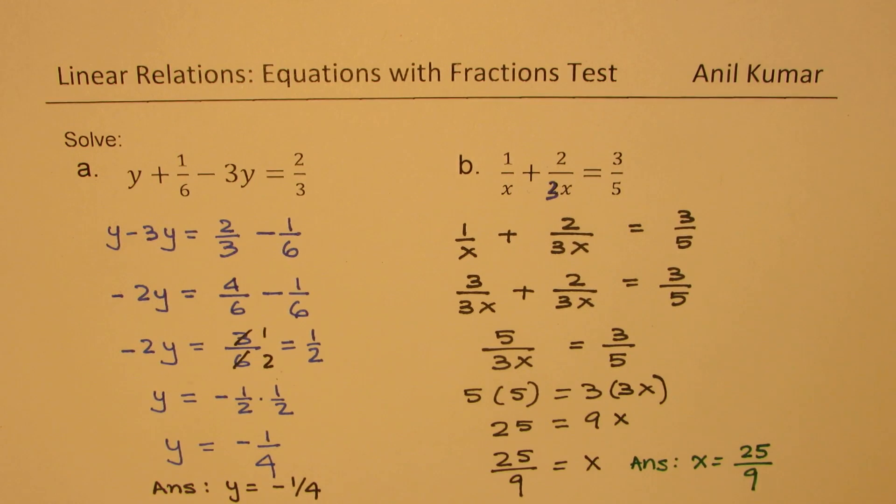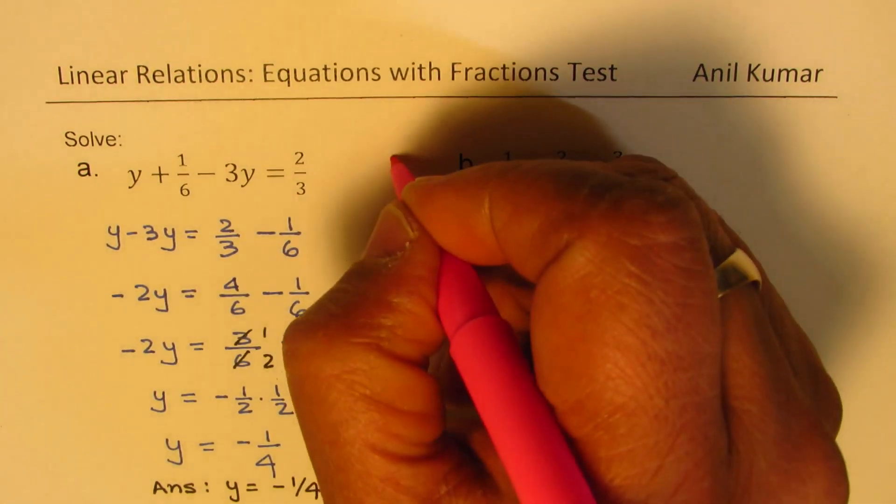I hope the steps are absolutely clear. Whenever you have fractions involved, you have to have a common denominator. Once you have a common denominator, then you can add or subtract the fractions. The idea is to always keep the like terms together, the numbers on the other side. Once you reach a stage which is kind of a ratio, you can cross multiply and find your solution.